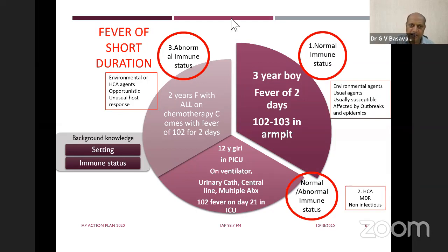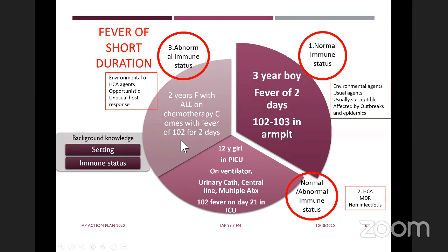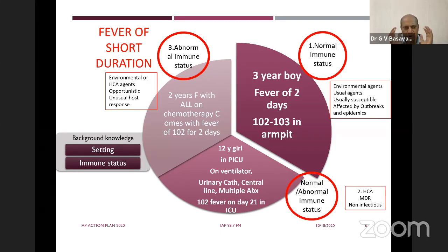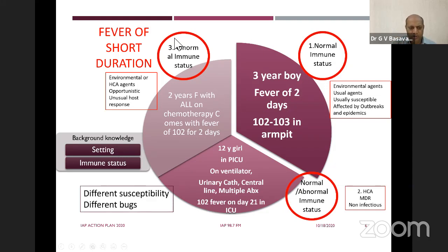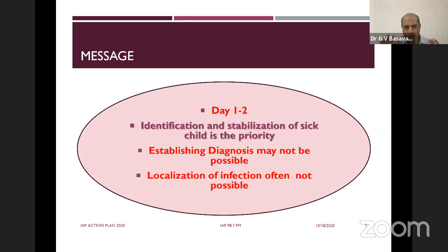Another scenario: a 2-year-old child with ALL on chemotherapy comes with fever of 102. Any immunocompromised child with fever — always think about opportunistic infection or healthcare-associated infection which is very resistant. This is a special circumstance requiring immediate attention. Different susceptibility and different bugs help you pick up the diagnosis. These cases are more likely to be medical emergencies requiring immediate attention.